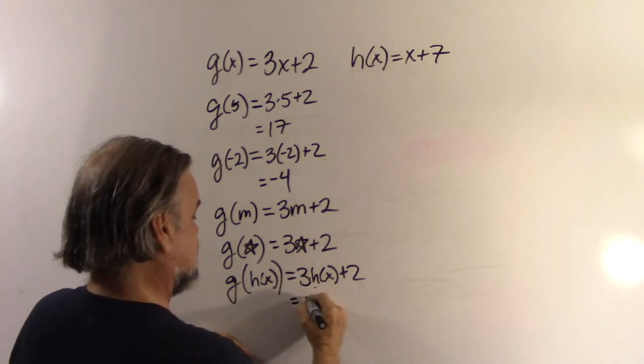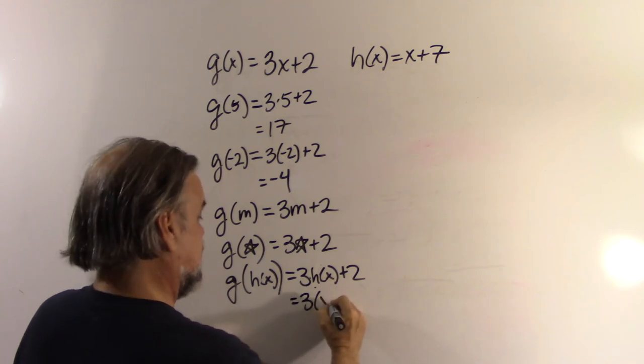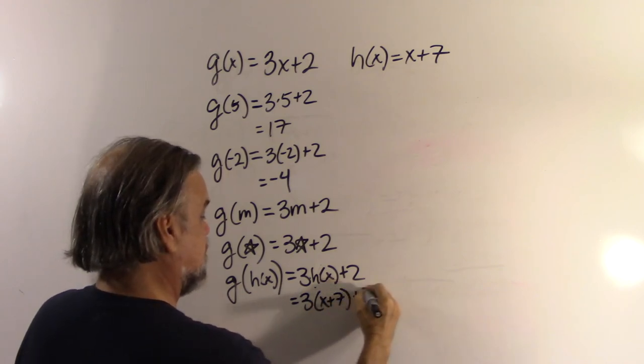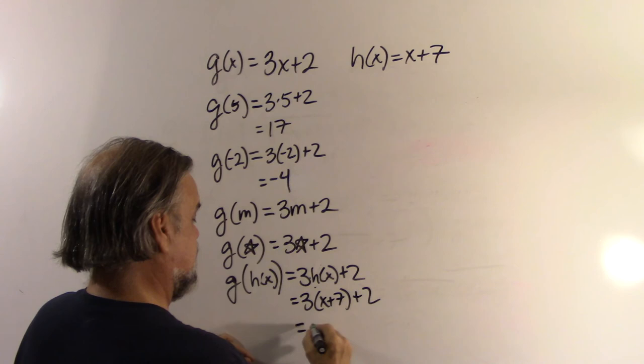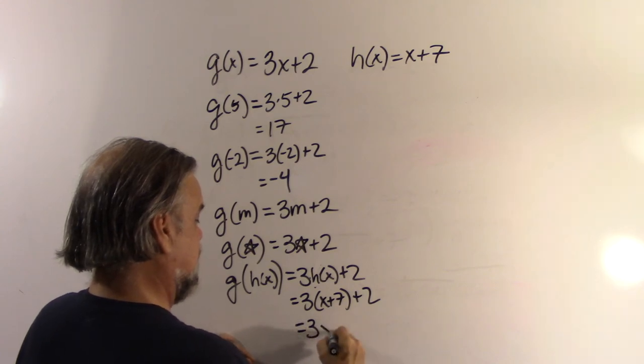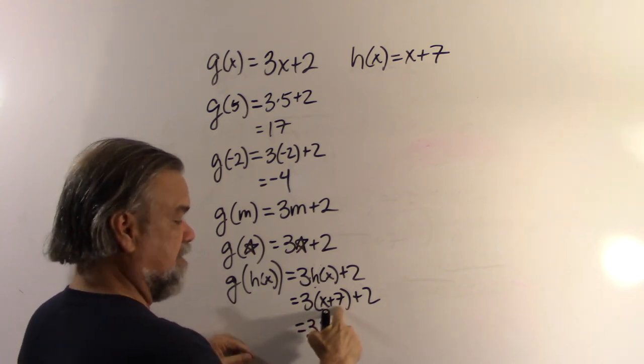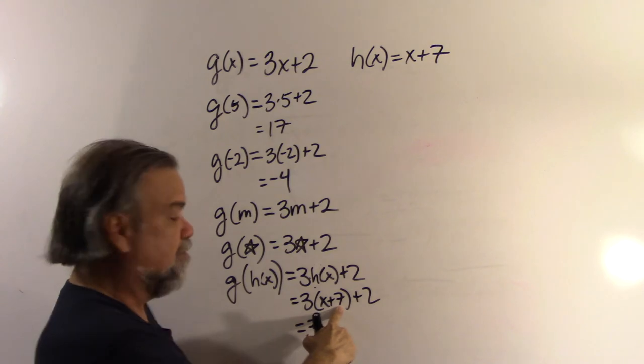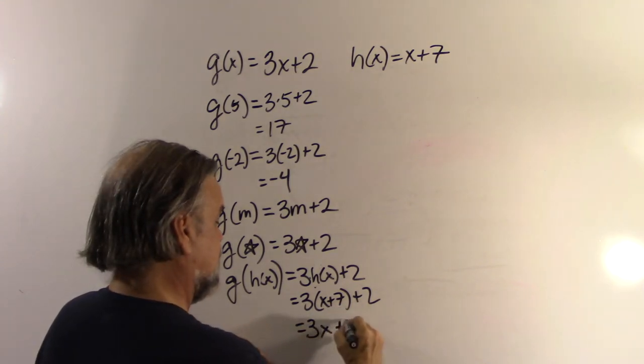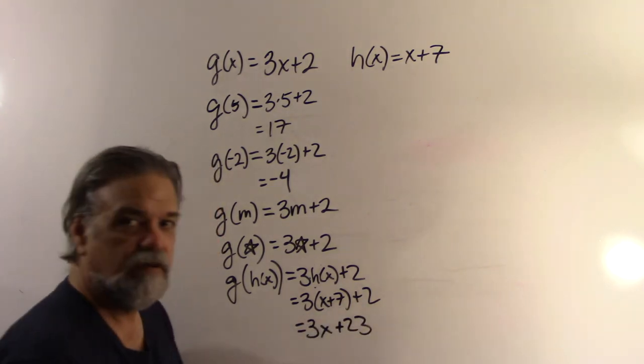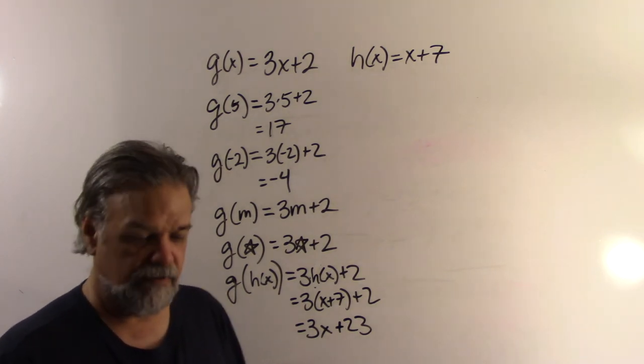Now, I know what h(x) is. h(x) is x plus 7. So, that means this h(x) right here, I can say, oh, well, that's going to be 3 times (x plus 7) plus 2, and that's 3x plus 3 times 7, which is 21, plus 2, which is 23. All right, that's pretty good, pretty easy.